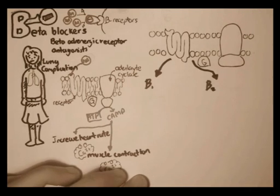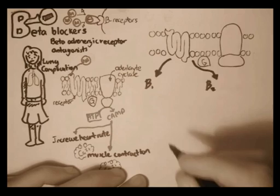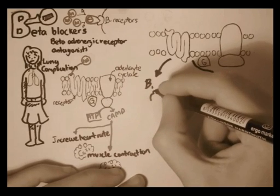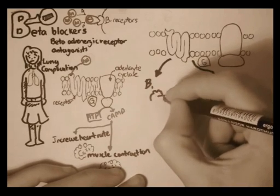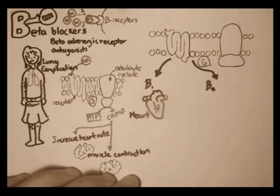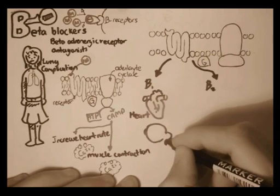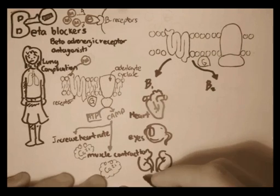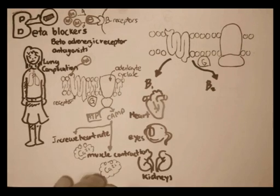For example, in the heart, beta type 1 is mostly found rather than beta type 2, but there are still beta type 2 receptors in the heart, just not as many. The eyes and the kidneys also have mostly beta type 1 receptors, and again there are still beta type 2 receptors on them, just not as much.